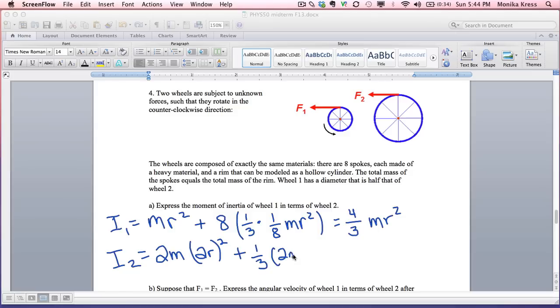Everywhere you see an r, you're going to write 2r. So 2m times 2r squared plus all of this stuff, which actually just came out to one-third, and then we've got 2m and then 2r squared. Work all that stuff out, and it's going to come out to 32 over 3 mr squared. If we want to compare I1 in terms of I2, we divide I1 by I2. I1 divided by I2 is 4 thirds mr squared divided by 32 thirds mr squared, which comes out to 4/32 or 1/8. That means the moment of inertia of the big wheel is 8 times the moment of inertia of the small wheel.